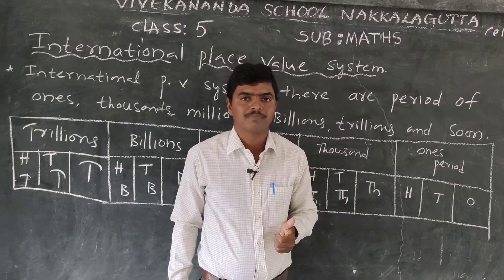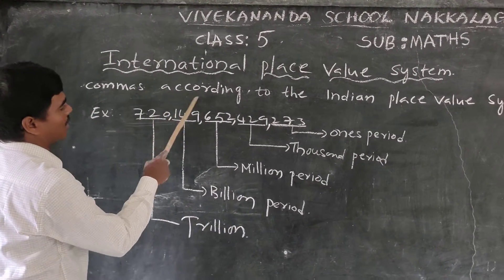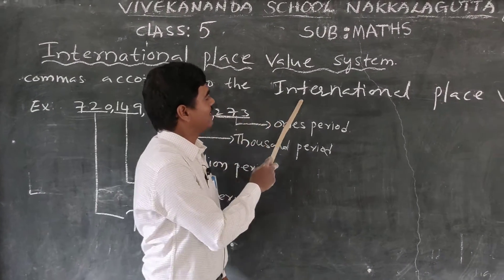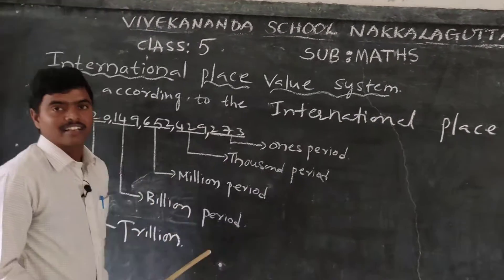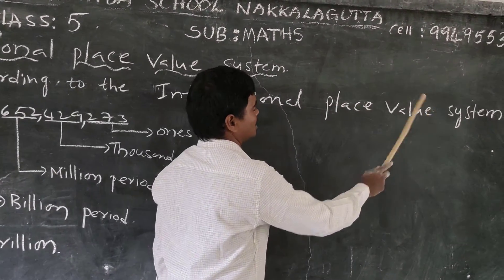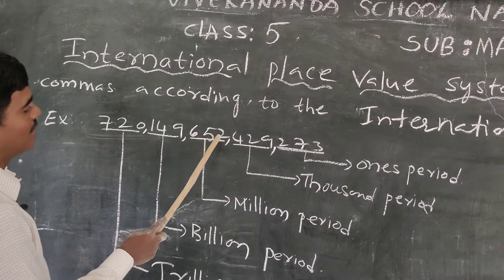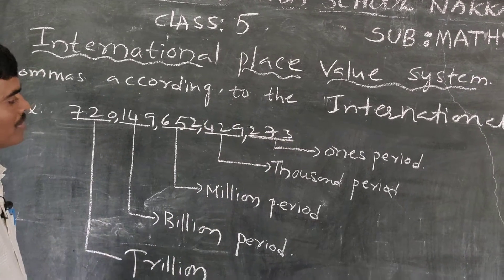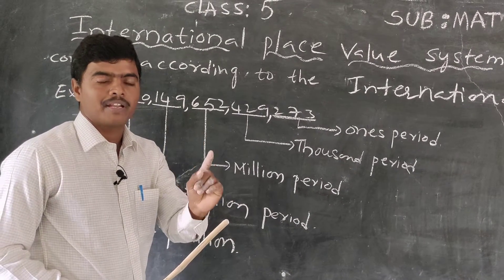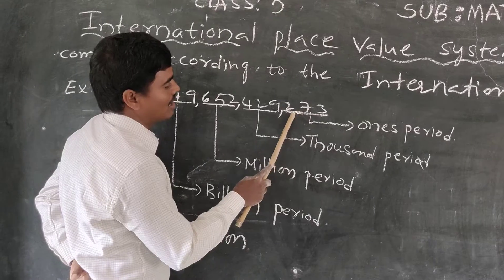Let's do an example. Write commas according to the international place value system for the number 652429273. According to the international system, the first period is the ones period with three places: ones, tens, hundreds — then a comma. The second period is the thousands period with three places: thousands, ten thousands, hundred thousands — then a comma.